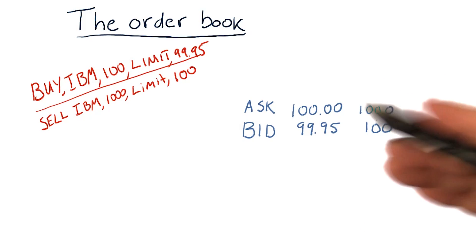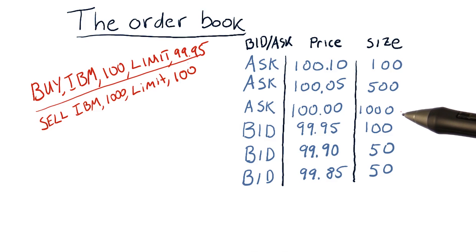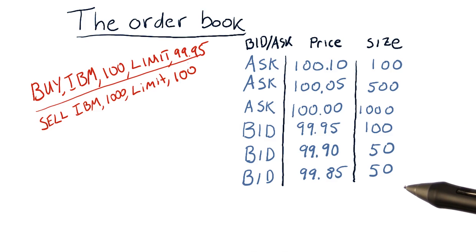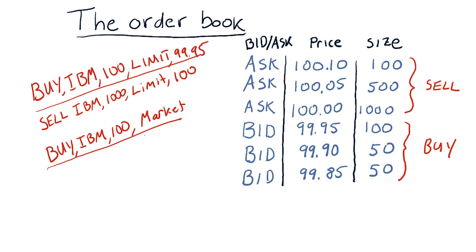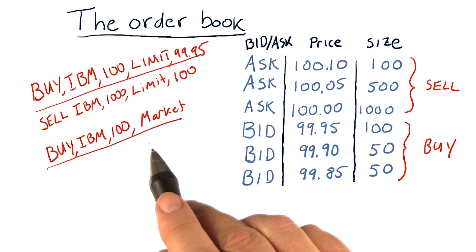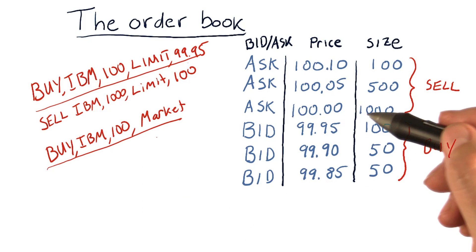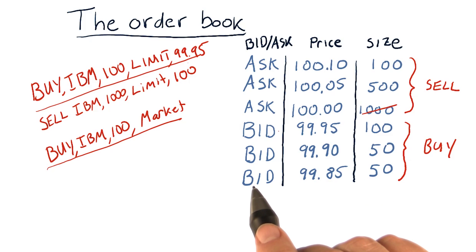Now let's say more and more orders come in and it flushes out our order book a bit. Here's our order book as it's flushed out — we've got a number of asks, which are requests to sell stocks, and a number of bids, which are requests to buy. Suppose now we get a market order to buy 100 shares of stock. The exchange looks at its order book and sees yes, we have lots of shares for sale. We have to give the client the lowest price, so we'll give that client 100 shares priced at $100.